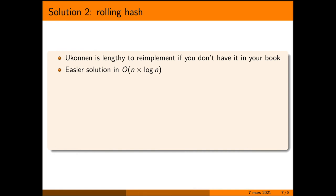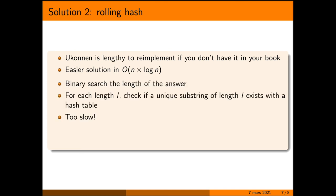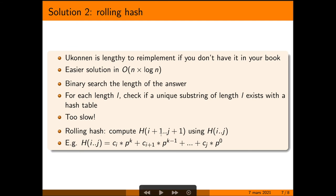So there is an easier solution in n log n. You binary search the length of the answer, and for each length, you check if a unique substring of that length exists with the hash table. That is only n m again, though, if your hash function executes in constant time. So for that to happen, you want to be able to compute the hash of a substring using the hash of the previous substring, i plus one to j plus one, using i to j.